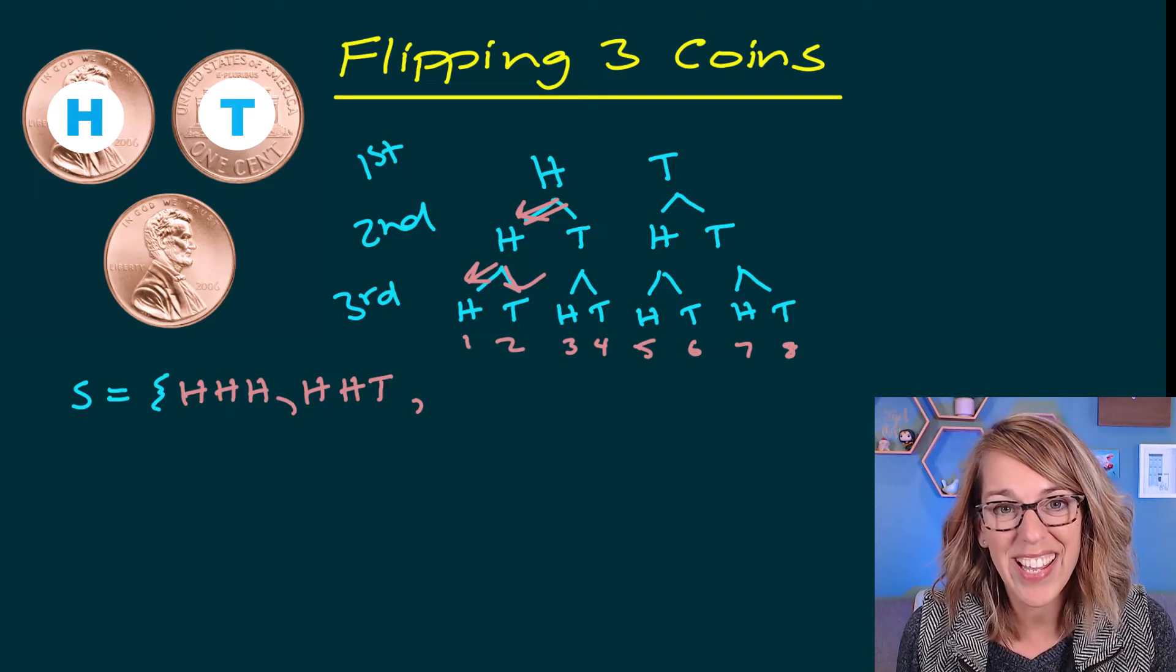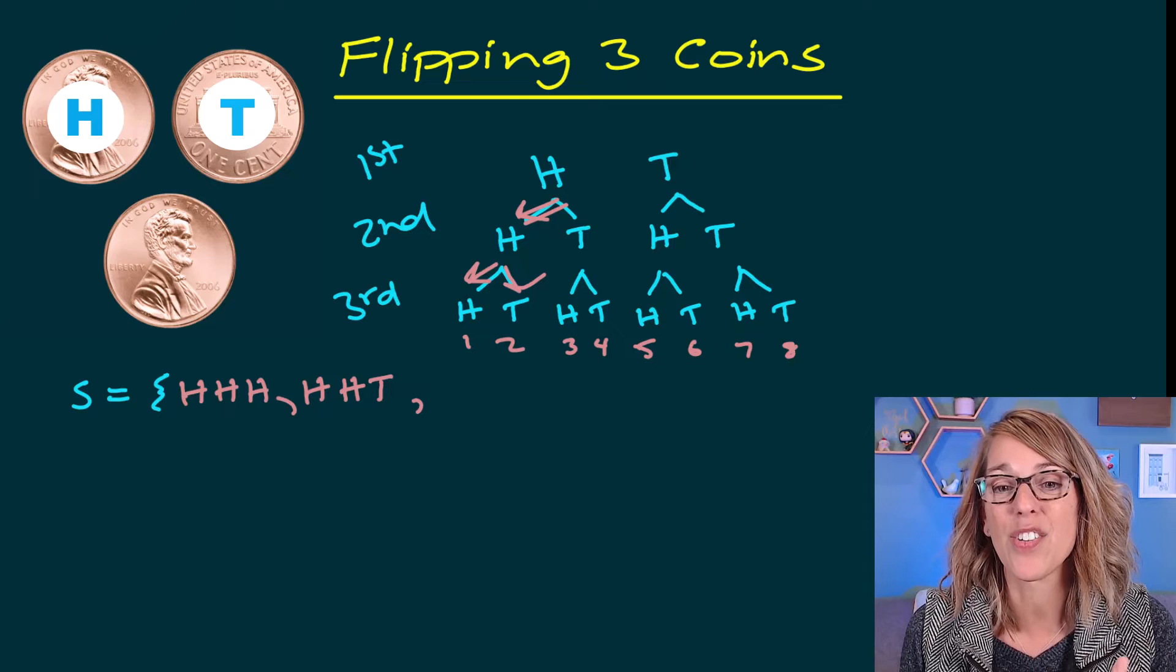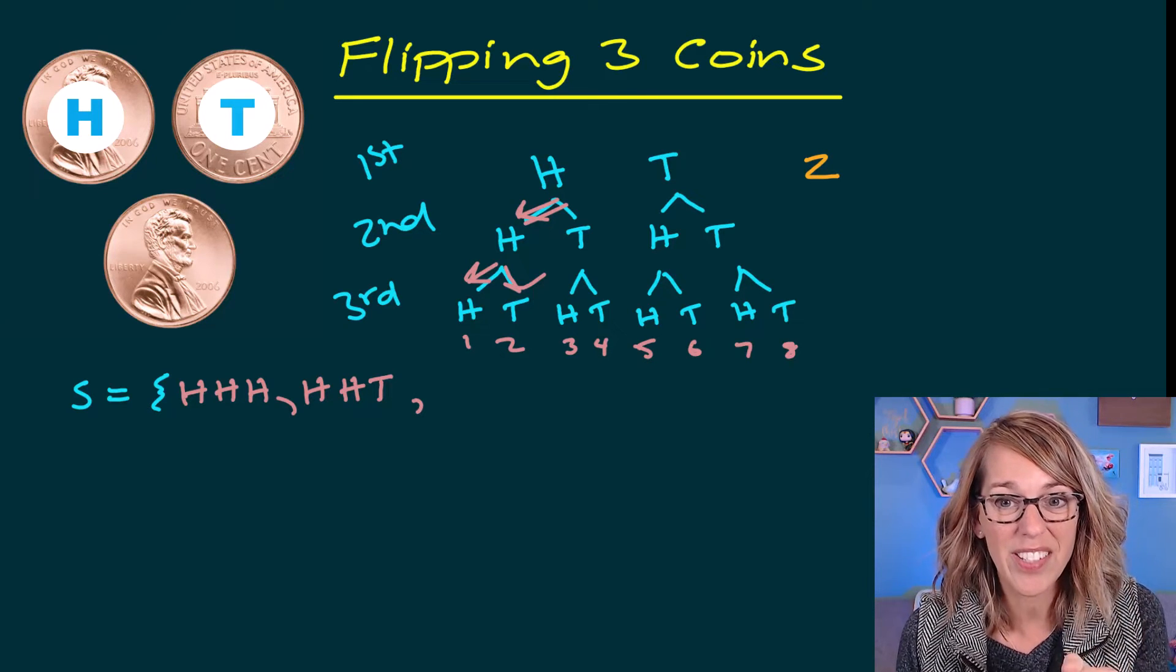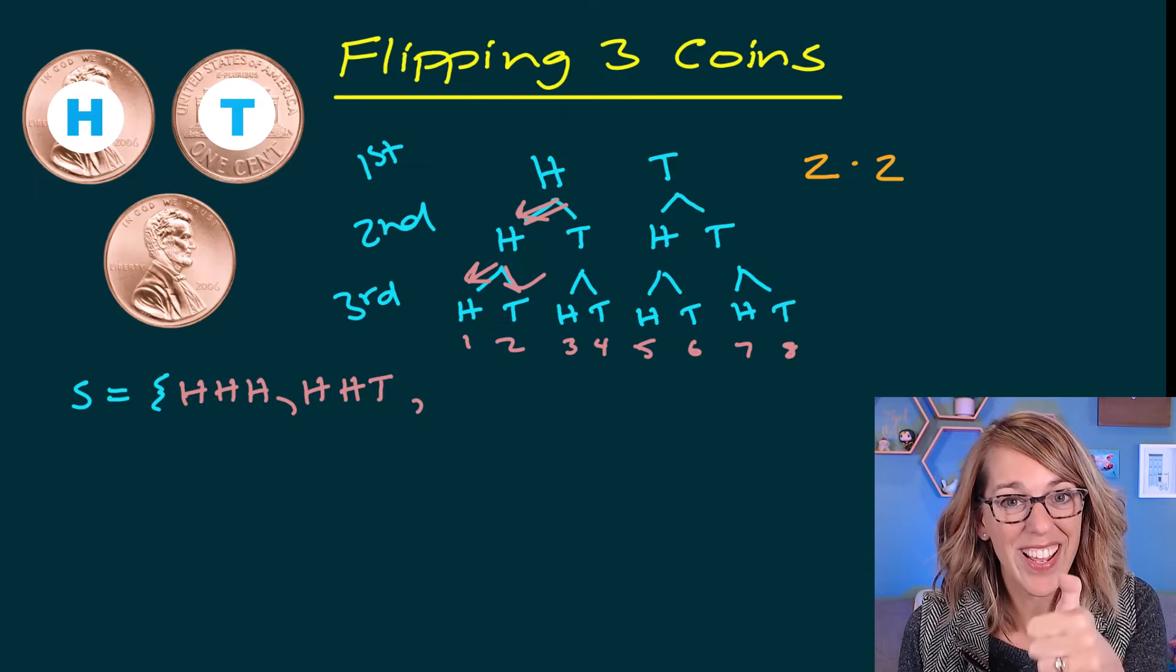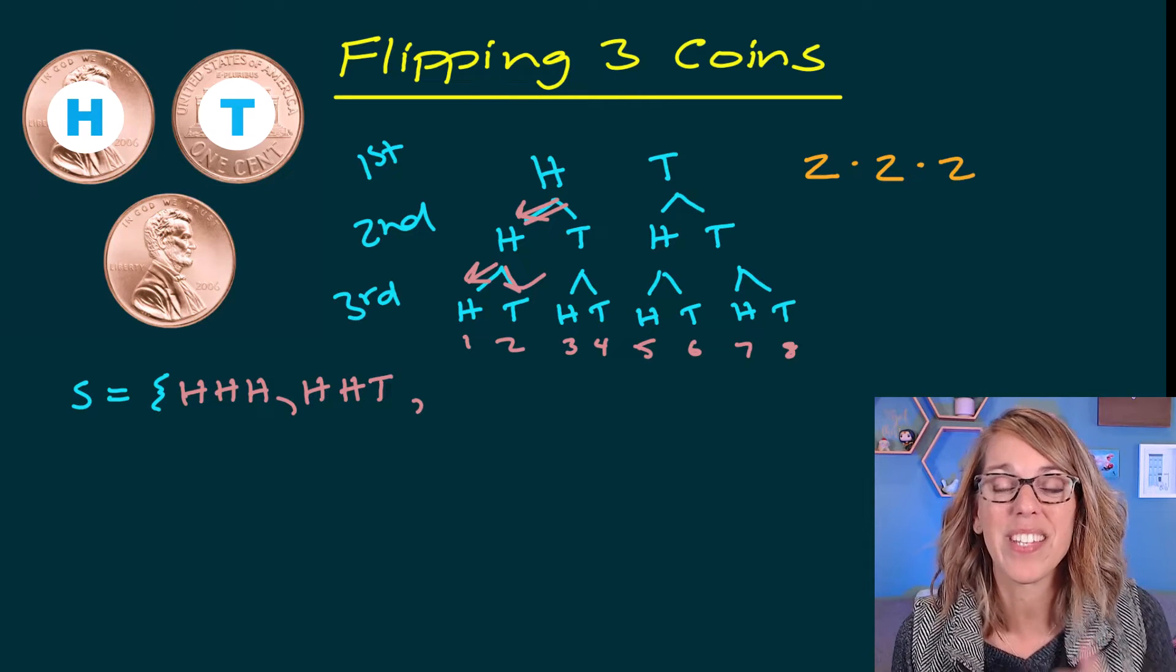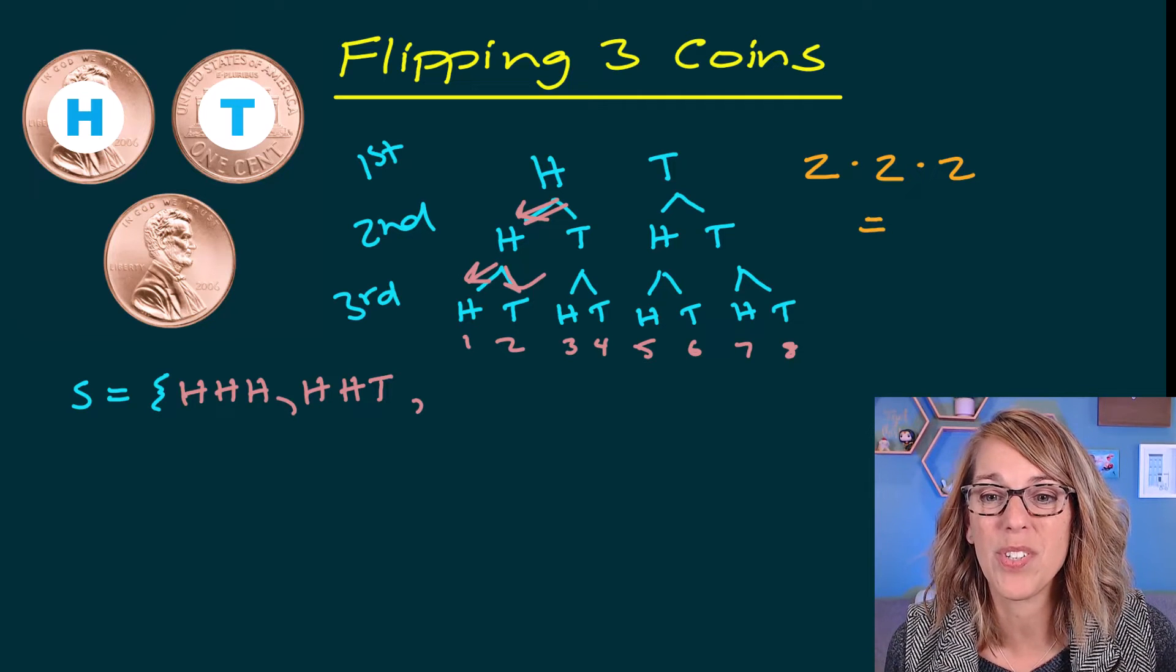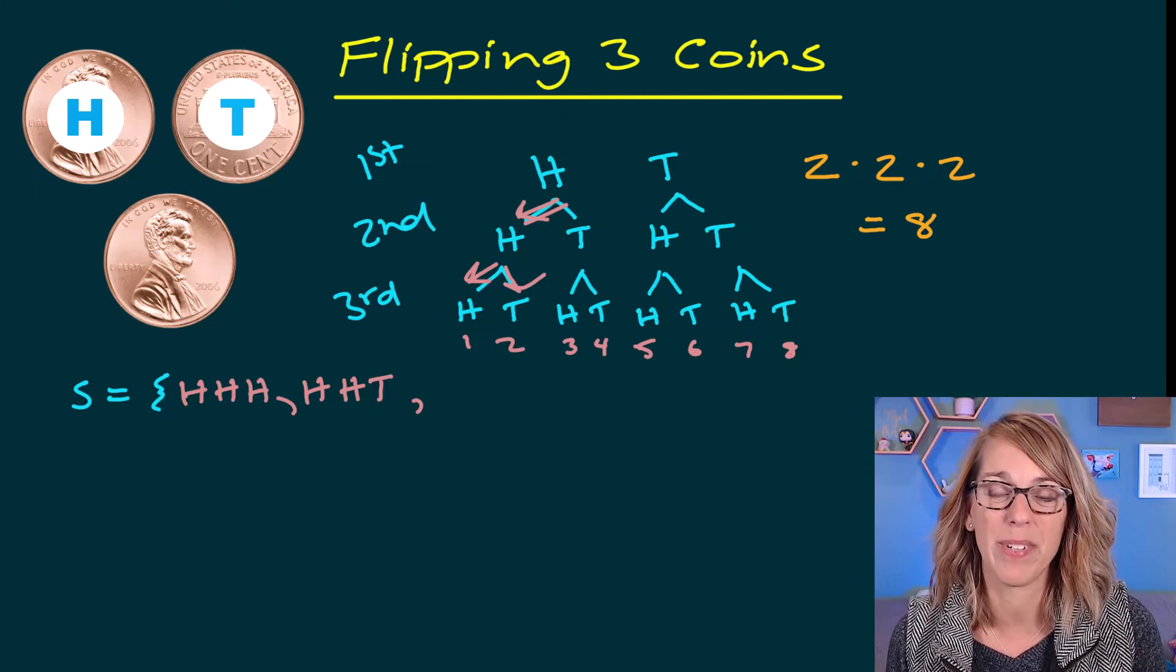I can calculate that by knowing that there are two possible outcomes for each coin. Heads or tails on the first times heads or tails on the second times heads or tails on the third. Two times two times two gives me eight possible outcomes.